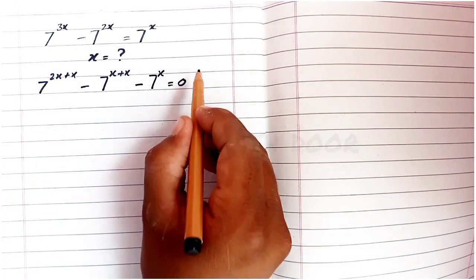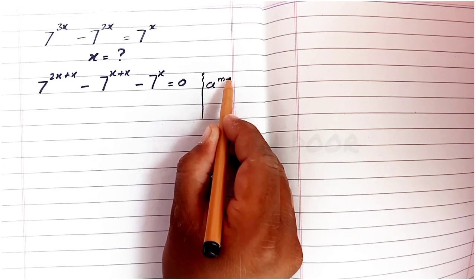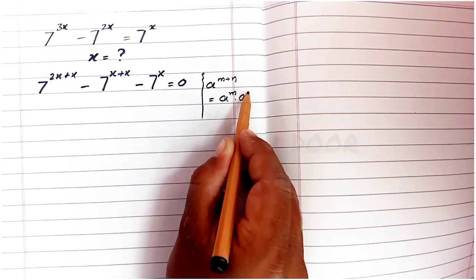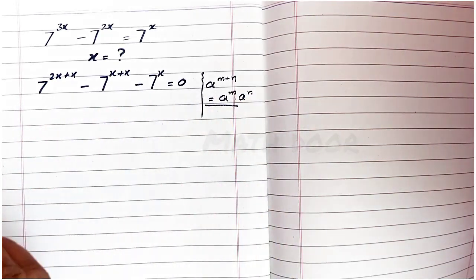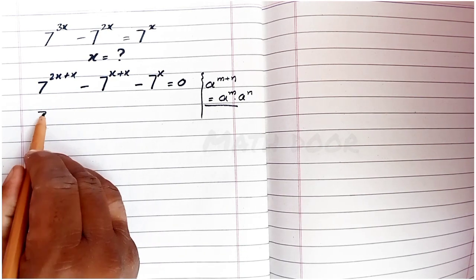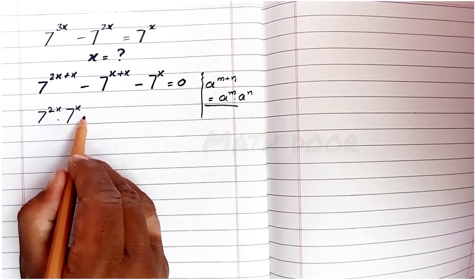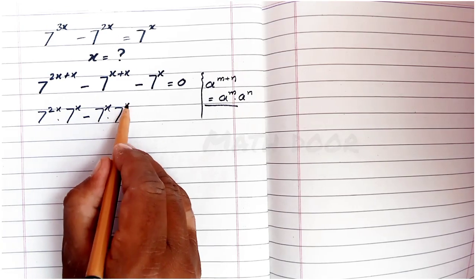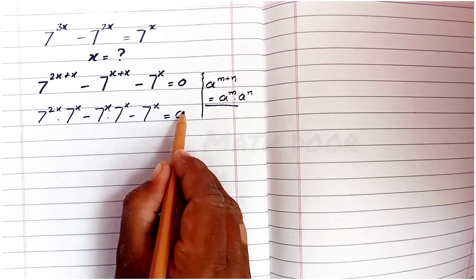We have the power rule: a power m plus n is equal to a power m times a power n. Applying this rule on both terms, we write: 7 power 2x times 7 power x, minus 7 power x times 7 power x, minus 7 power x is equal to 0.